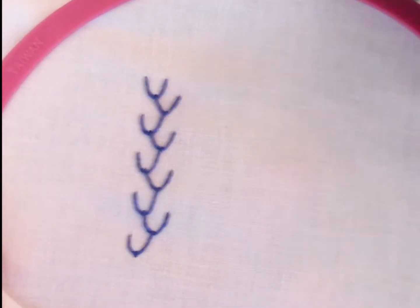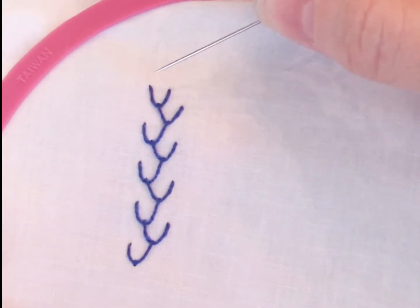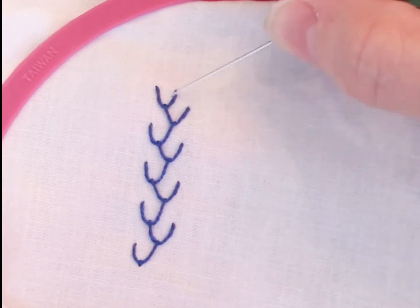This is a feather stitch, and it's basically little V's or U's that are hanging off of each other. So we make one, and then we move over and make the next one.